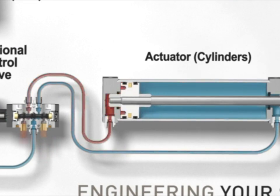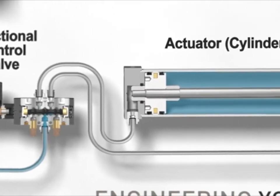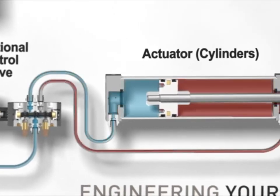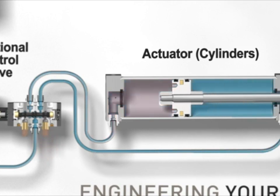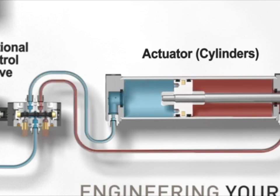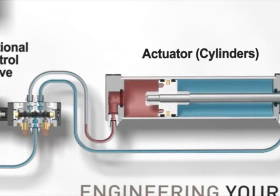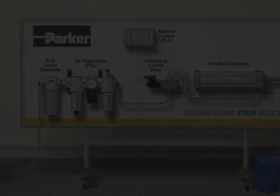In this example, the PLC is telling the actuator to move a product by sending a signal to the directional control valve, which uses the clean, dry, compressed energy to power the actuator. Pneumatics are also commonly used to press two components together in an assembly process to help form a finished good.